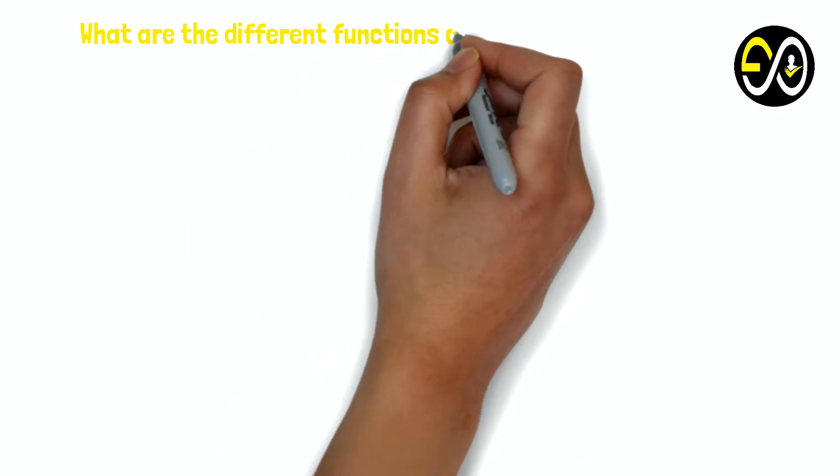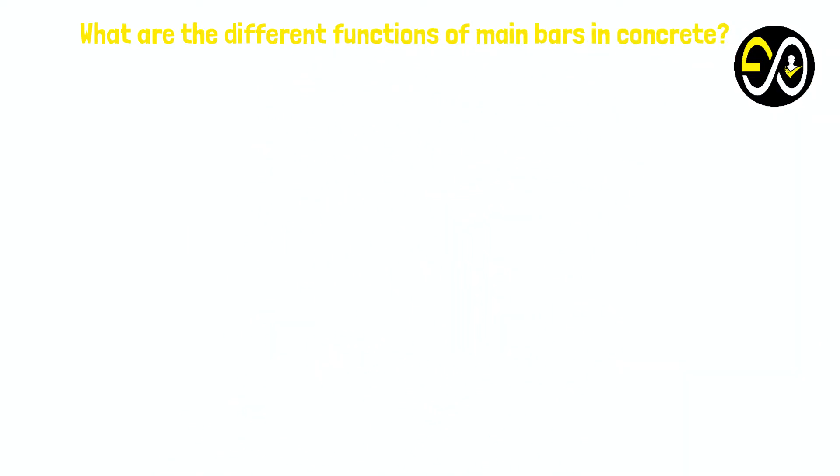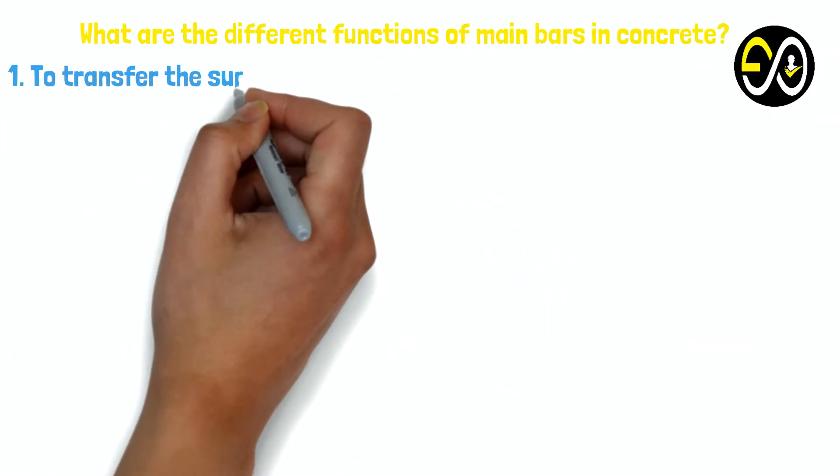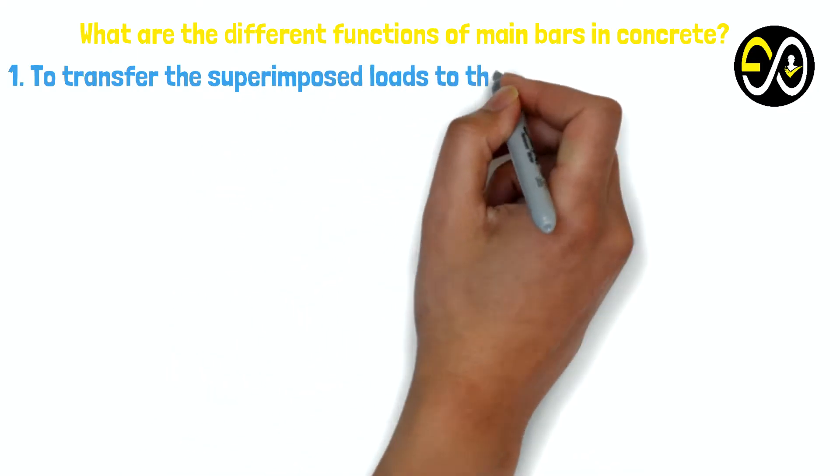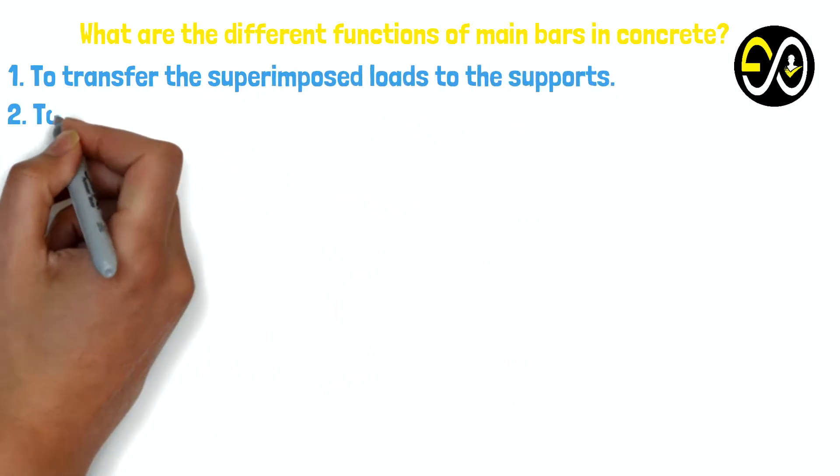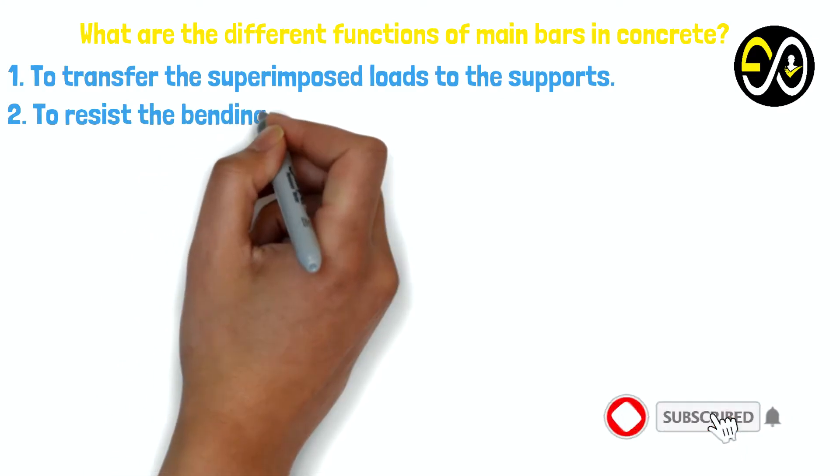What are the different functions of main bars in concrete? 1. To transfer the superimposed loads to the supports. 2. To resist the bending moments.